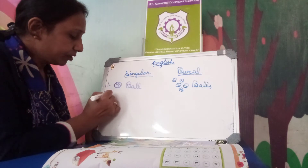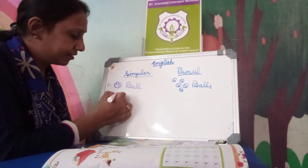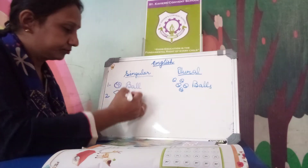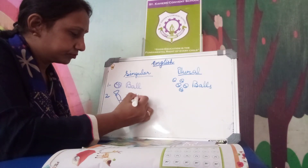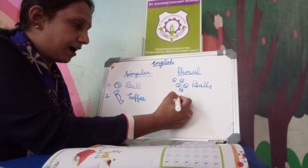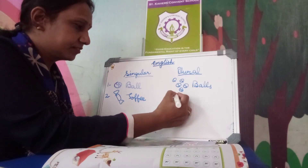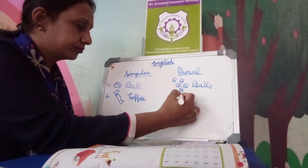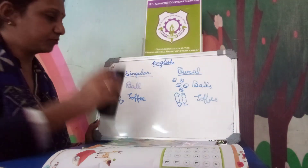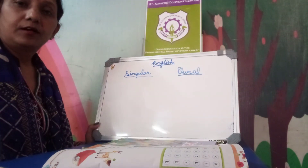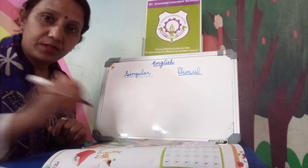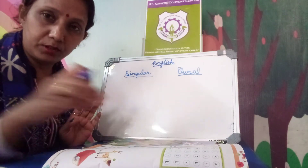Now you are having one toffee. You love eating toffee? Yes or no? So this is what? One toffee. And these are many toffees. This way, what you have to do is practice singular and plural in your notebook also. I will give you worksheets to do. There you have to complete your work in your notebooks also.